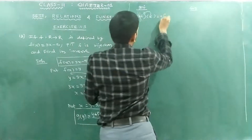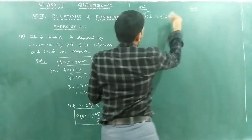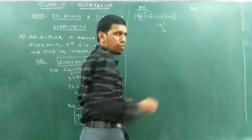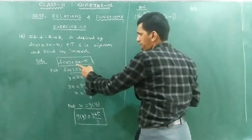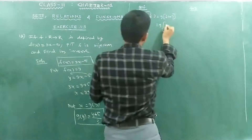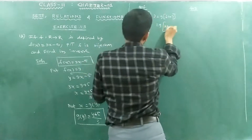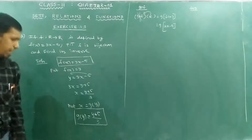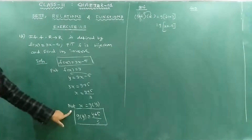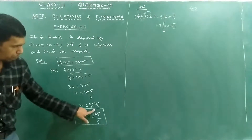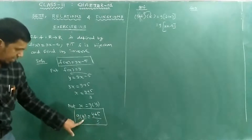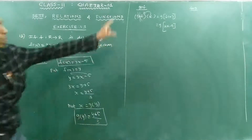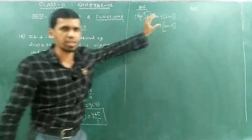Now compute g of f of x. f of x equals 3x minus 5. So apply g: take f of x, which is 3x minus 5, and put it into g, giving g(f(x)) equal to (3x minus 5) plus 5 divided by 3.